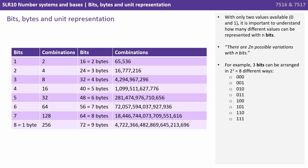How many different values can be represented with a given number of n bits? There are 2^n possible variations with n bits. So for example, three bits can be arranged in two to the power of three, or eight different ways. We can see a table here that represents the number of possible combinations dependent on the number of bits, and you can see it doubles each time.